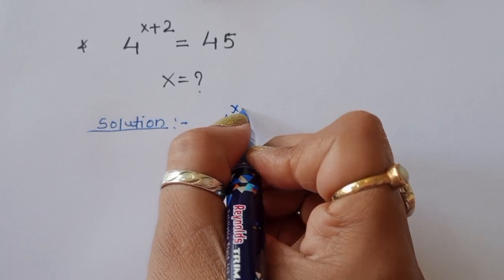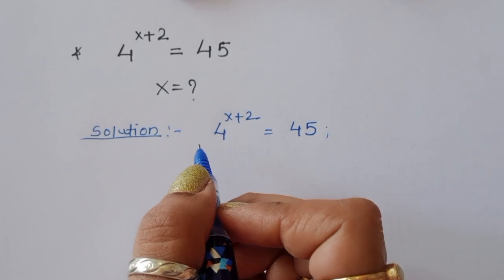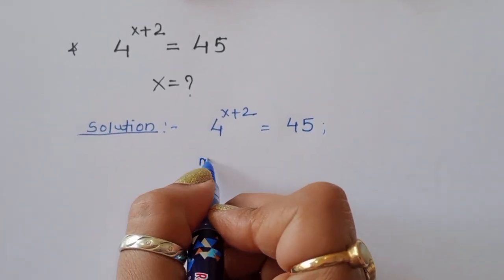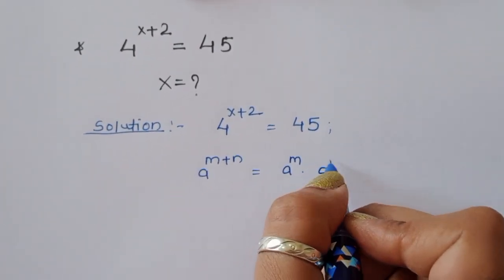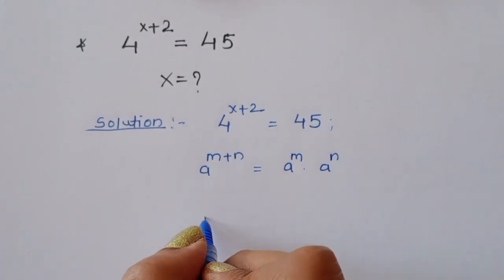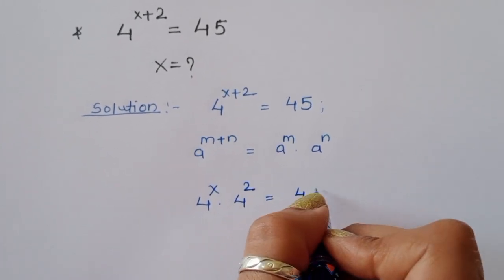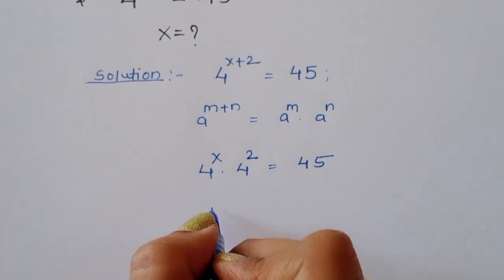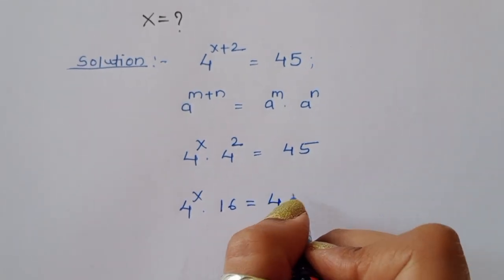4 power x plus 2 is equal to 45. We know the formula: if a power m plus n is given, we can write this as a power m times a power n. Using this formula, we can write 4 power x times 4 power 2 is equal to 45. Now, 4 power 2 is 16, so 4 power x times 16 is equal to 45.